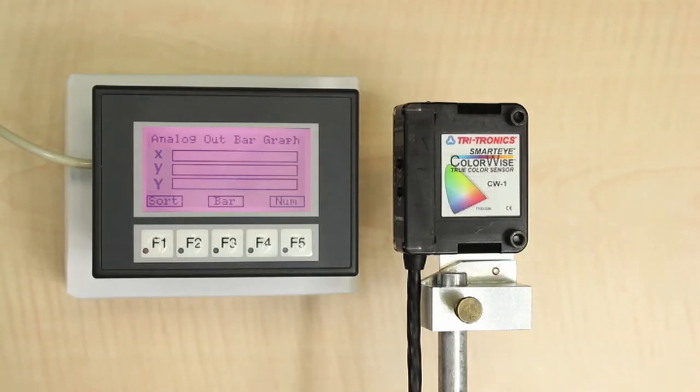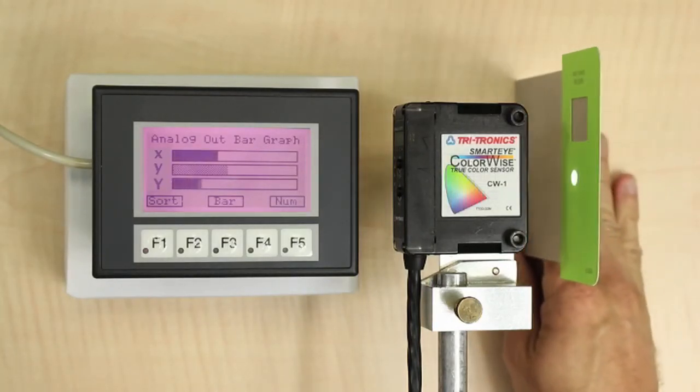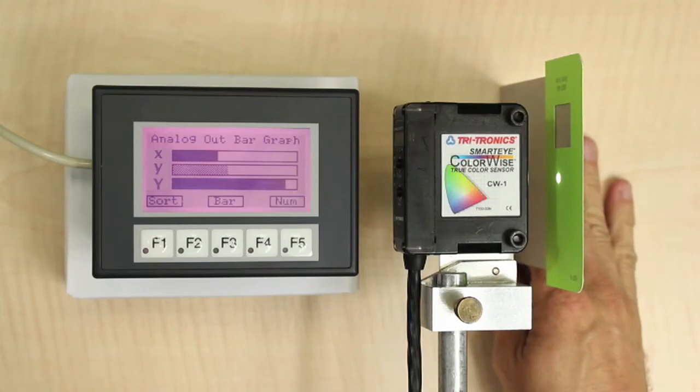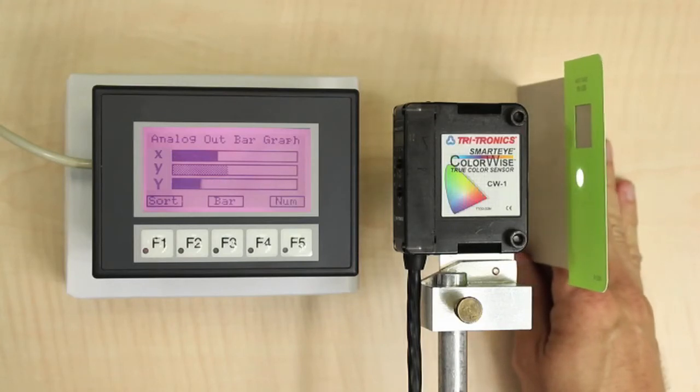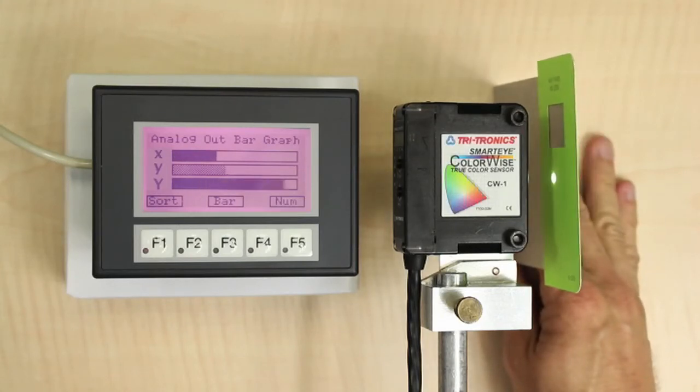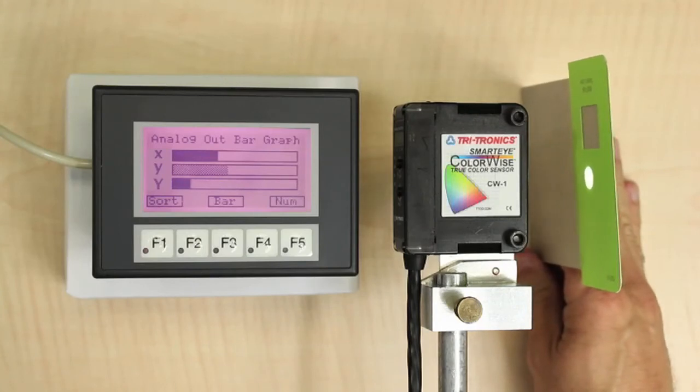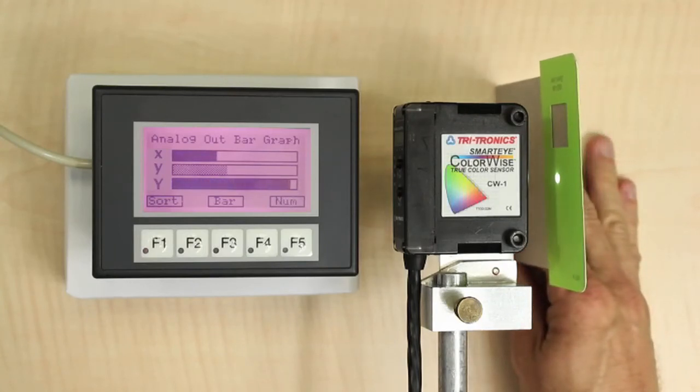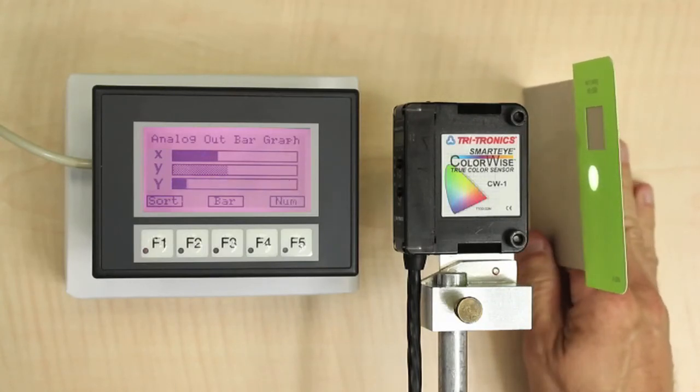Now let's consider the lime color as before. Here we see that the bar graph shows the XY coordinate values of the lime color. Note that as we change the distance to the target, we see that these remain essentially stable, and only the intensity bar changes. The stability of the XYY type output makes it a great choice for many applications.